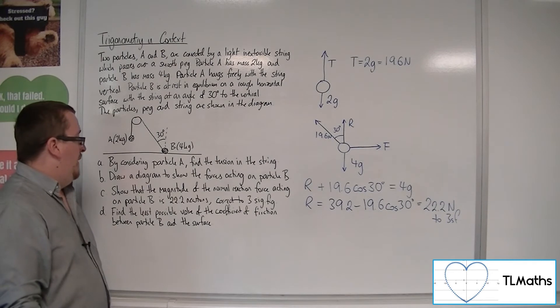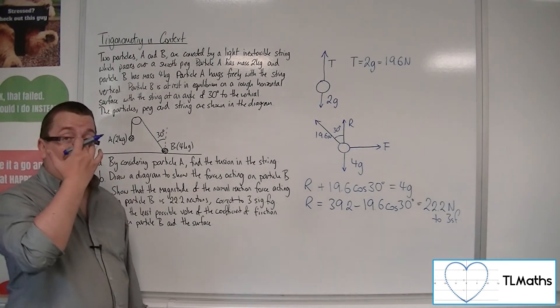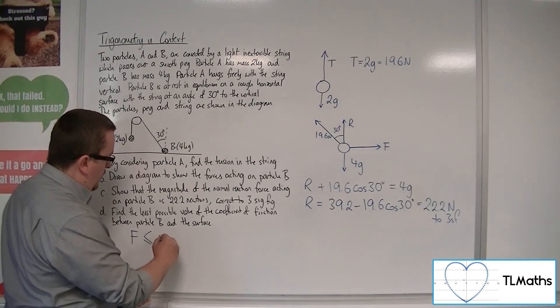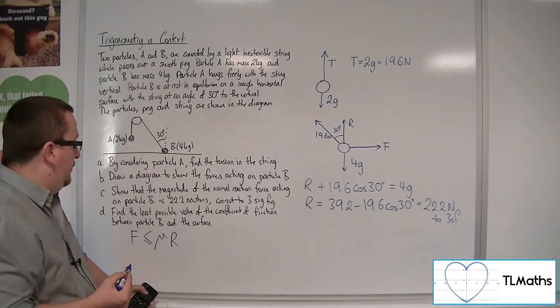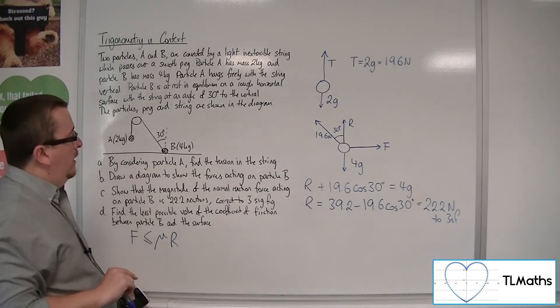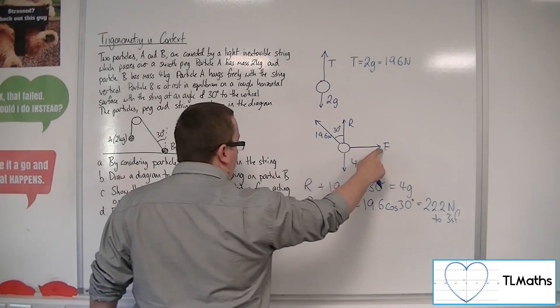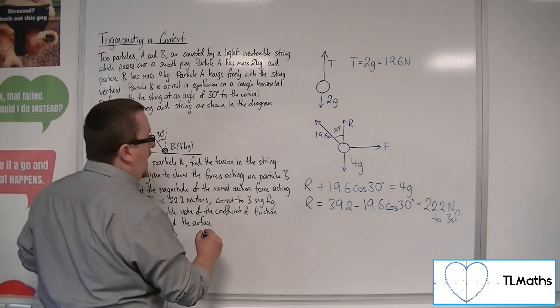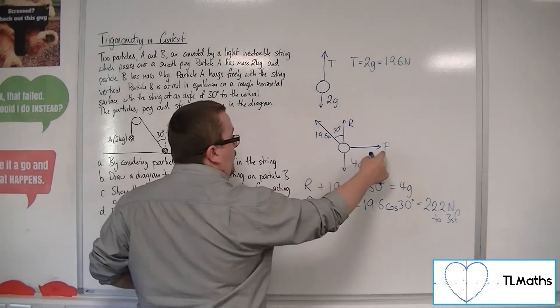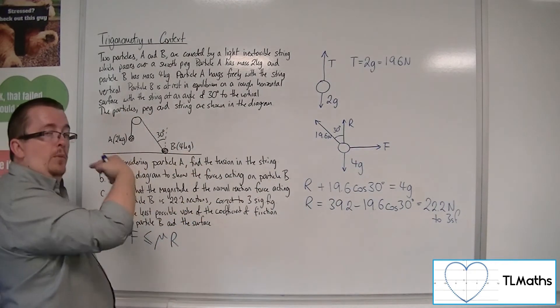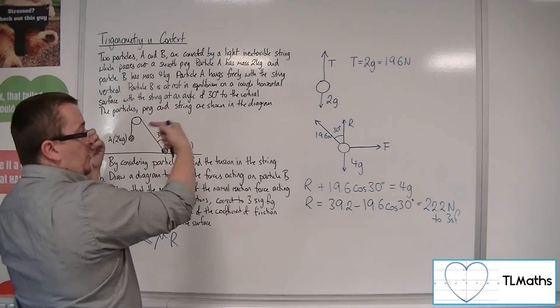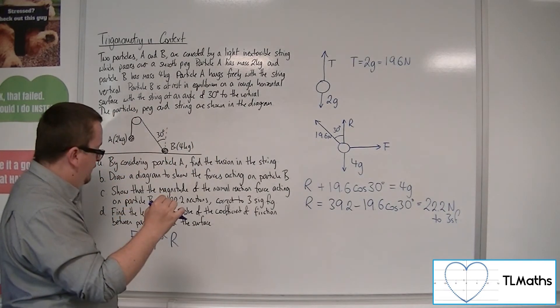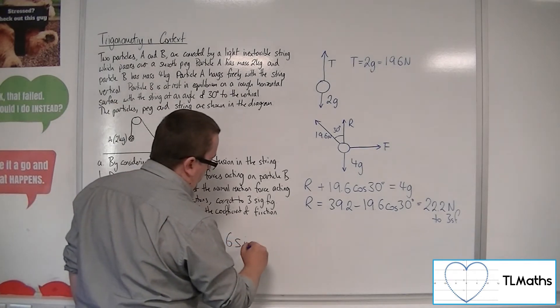Part D, find the least possible value of the coefficient of friction between particle B and the surface. Now, what we need to remember is that the frictional force is less than or equal to mu, the coefficient of friction, times by the normal reaction force. Now using that inequality, we can apply that here. Now here's F. Now, for the frictional force, working in that direction, what we're going to need, because it's in equilibrium, is for the force in that direction to be the same as the one that is pulling against it. Well, we've got the tension in the string going in the horizontal direction, so that was the 19.6 sine 30. That frictional force has to be the same in order for them to be in equilibrium, so that frictional force must be 19.6 sine 30.